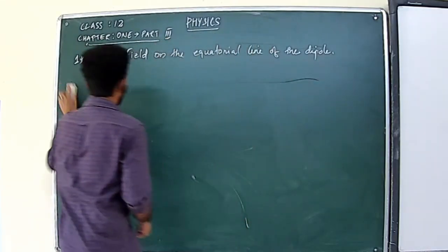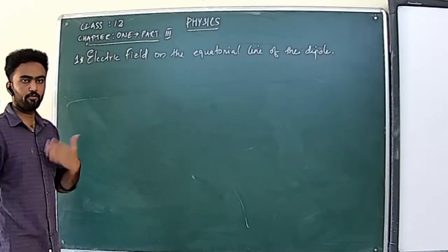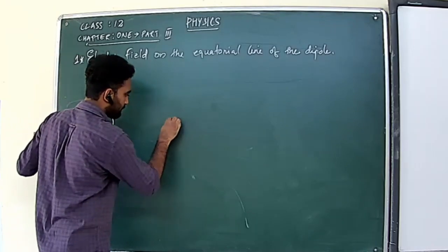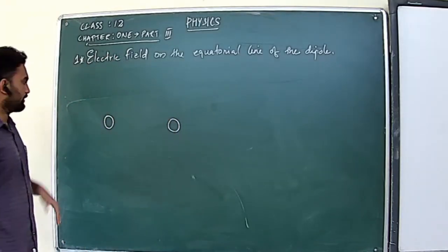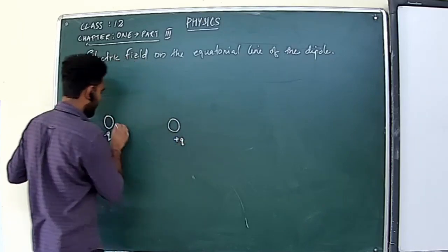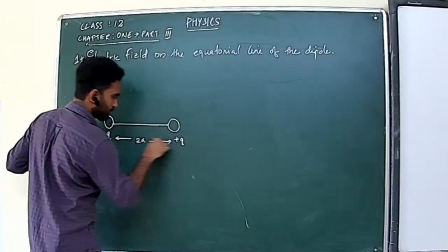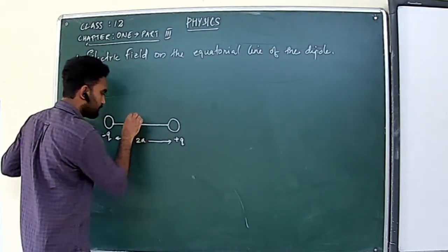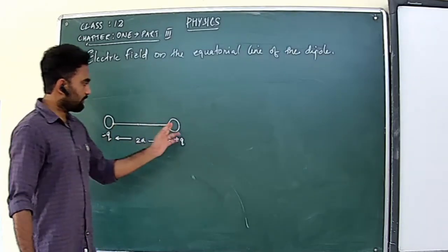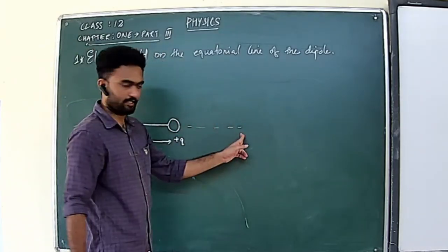Our first topic is the electric field on the equatorial line of an electric dipole. Consider an electric dipole — a combination of two charges having the same magnitude but opposite sign. We place plus Q and minus Q separated by a distance of 2A. The midpoint will be the center of the dipole. In the previous section we found the electric field on the dipole axis.